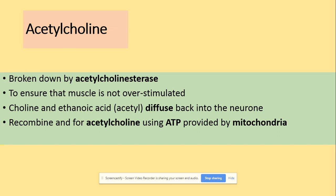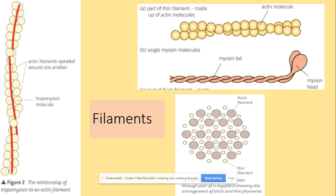What is acetylcholine and how is it broken down? It's broken down by the enzyme acetylcholinesterase. We do this to make sure that the muscle is not overstimulated. When it's broken down into choline and acetyl, the choline and acetyl diffuse back into the neuron and recombine to form acetylcholine using ATP provided by mitochondria. There are lots of mitochondria present — that's the adaptation to produce ATP, which is needed to recombine choline and acetyl.